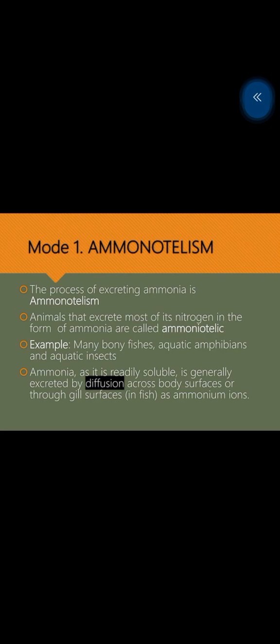Excretion of ammonia is called ammonotelism. Now we have mode first, which is ammonotelism. What is ammonotelism? The process of excreting ammonia is called ammonotelism, and the animals which excrete ammonia are called ammoniotelic. You need to know - many bony fishes, which are ammonotelism, require a lot of water. This means the animals which have a lot of water available.